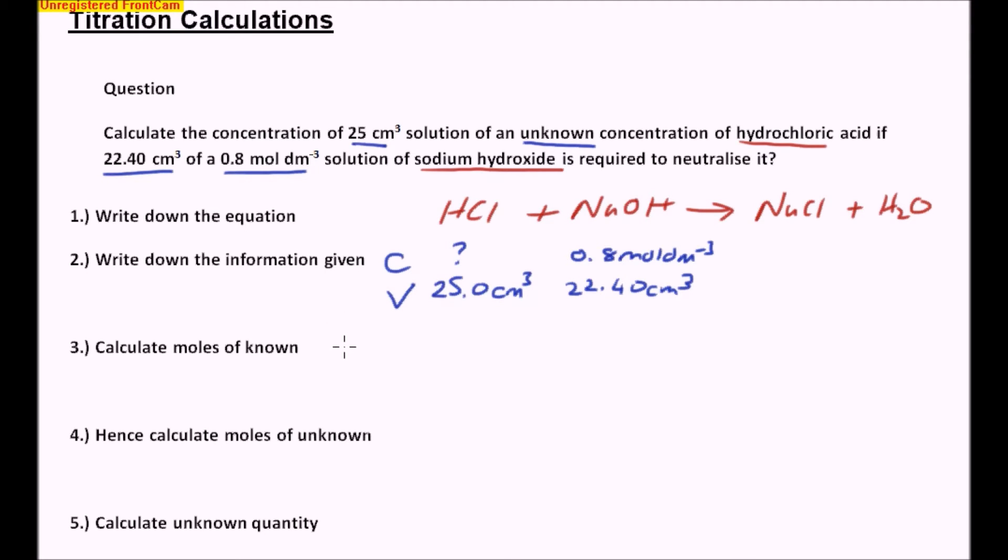Okay, so with those two things in hand, I can now work out the number of moles of sodium hydroxide that I have present. So the number of moles of sodium hydroxide is given to me by the calculation, concentration times volume divided by 1,000,